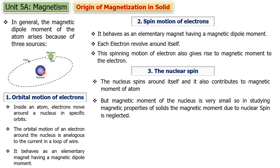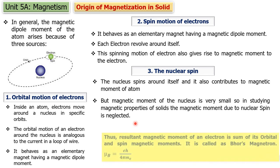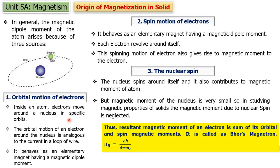The magnetic moment of the nucleus is very small compared to the magnetic moment contributed by electrons. So when we study magnetic properties of solids, the magnetic moment due to nuclear spin is neglected. So the total or resultant magnetic moment of an electron is nothing but the orbital magnetic moment plus the spin magnetic moment of the electron.